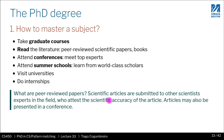So how do you master a subject? First, you will take graduate courses, and this is going to be your first year. You're going to be taking advanced level courses taught by the faculty of the department where you're taking your PhD. You will read the literature — peer-reviewed scientific papers and books. Usually when you're doing a PhD, you have a year or two of coursework.